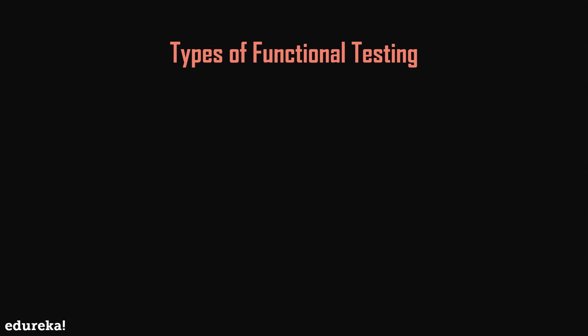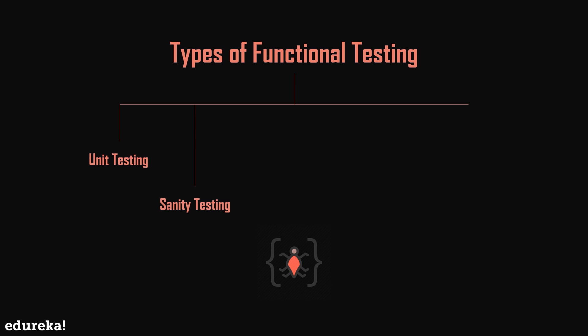Functional testing has many categories that can be used based on the scenario. First up we have unit testing, which is usually performed by a developer who writes different code units to achieve a particular functionality. This entails writing unit tests which call the methods in each unit, validate those when the required parameters are passed, and confirm the return value is as expected. Code coverage is an important part of unit testing, covering line coverage, code path coverage, and method coverage. Next up is sanity testing, which ensures that all the major and vital functionalities of the application or system are working correctly, and is generally done after a smoke test.